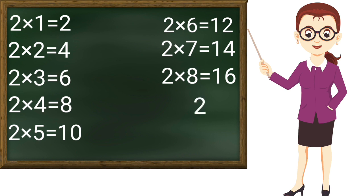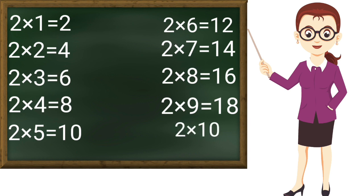2 sevens are 14, 2 eights are 16, 2 nines are 18, 2 tens are 20. Wow! Thank you ma'am.